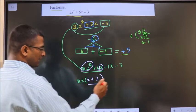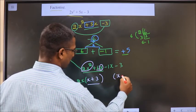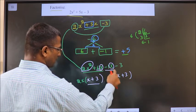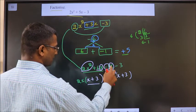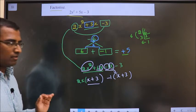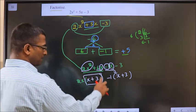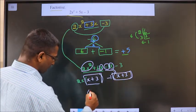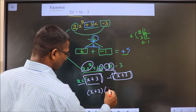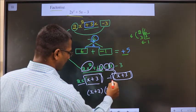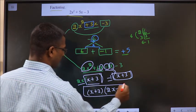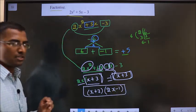Now, here whatever I got here also I should get the same thing. From this x has gone inside means outside is minus 1. Now, take x plus 3 common from both. So, here left out with 2x and here left out with minus 1. Thus, we have factorized. This is our answer.